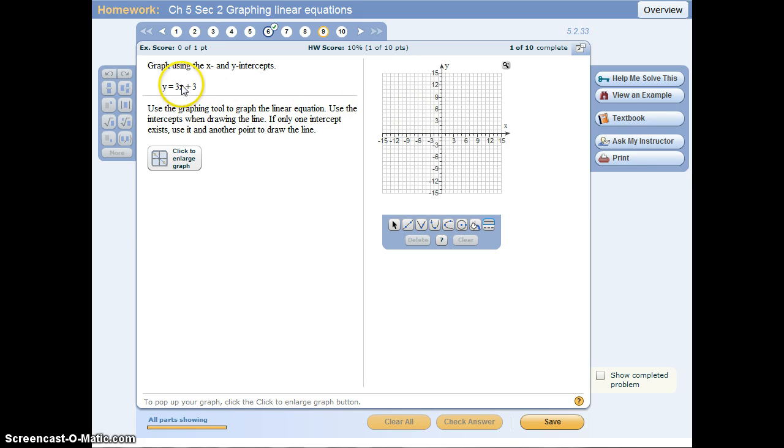To find my x-intercept, I set y equal to 0. If I make this a 0, I get 0 equals 3x plus 3, and if I solve that for x, I get negative 1.